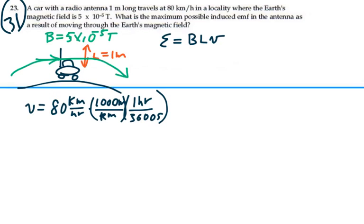So the kilometers will cancel out and the hours will cancel out, and this will give us 22.22 meters per second.